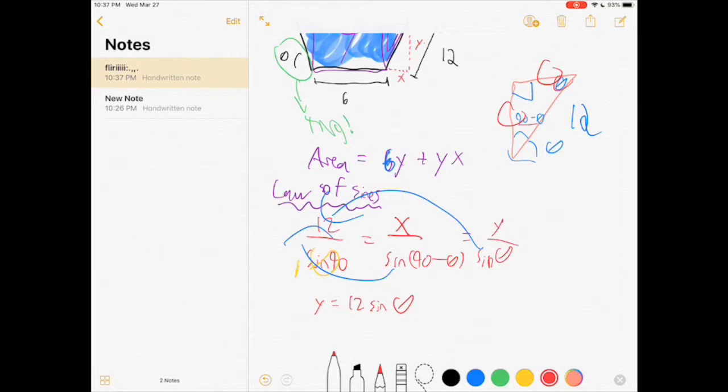and x equals 12 sine 90 minus theta. Both x and y are in terms of theta, which is great, because then we can just find the maximum value of that.